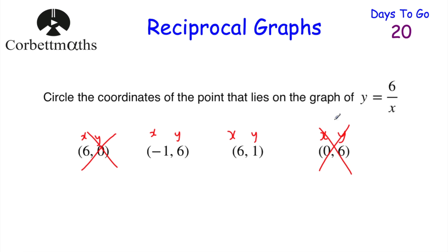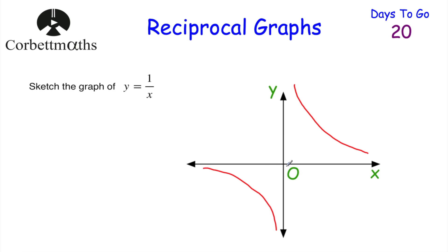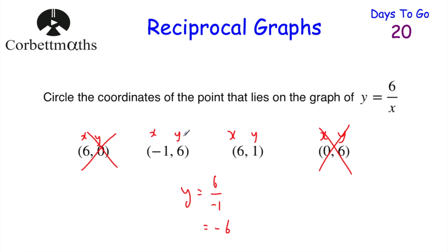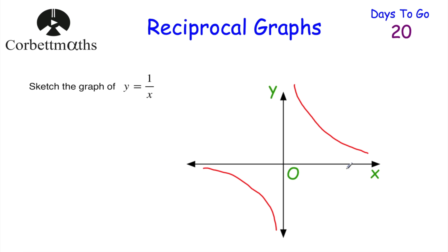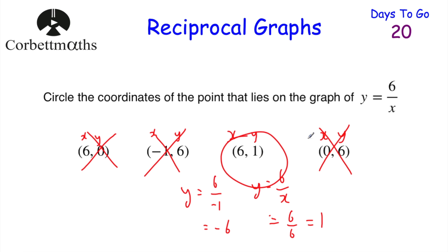Let's focus on the remaining two options. If x is negative 1, y equals 6 divided by negative 1, which is negative 6 - not 6, so that wouldn't work. That means it should be the point 6, 1. Let's check: y equals 6 over x, if x is 6, y equals 6 divided by 6, which equals 1. So 6 along 1 up - that works! So we circle that point.